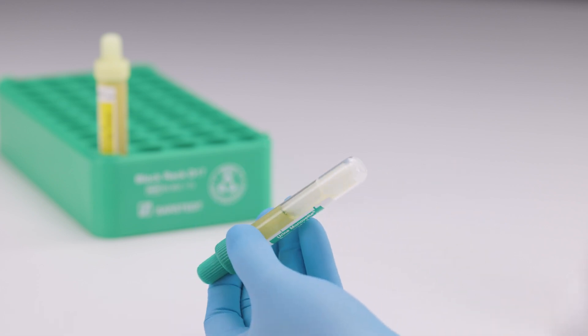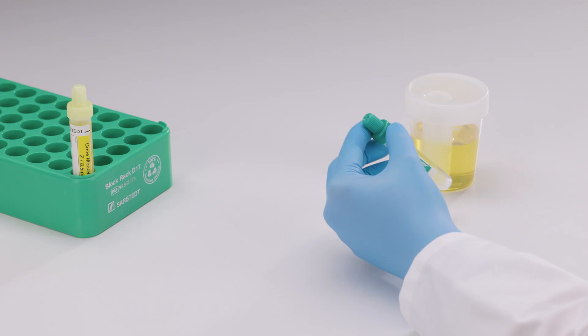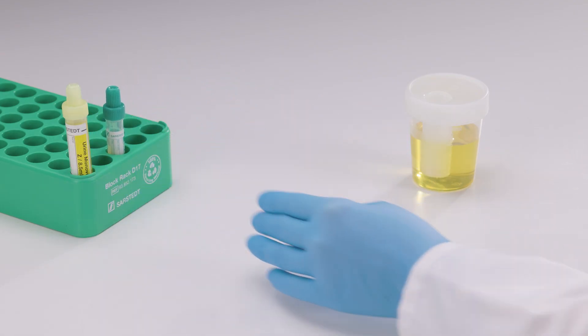Invert the urine monovette boric acid around five times or until the boric acid is completely dissolved.